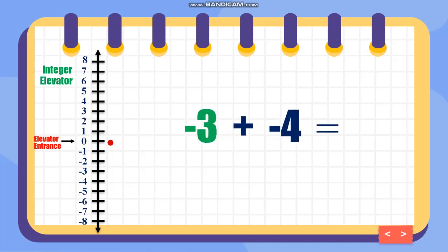Another example: I have negative 3 plus negative 4 — both are negative. Starting from 0, I need to go down to negative 3. Then I need to add another negative, so from negative 3, I go down 4 more. That is equivalent to negative 7.